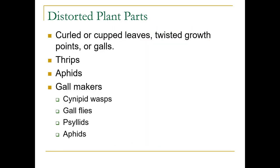Distorted plant parts include curled or cupped leaves, twisted growth points, or galls. These can be caused by thrips, aphids, and then there are a bunch of gall makers — some wasps, gall flies, psyllids, aphids, et cetera. Adelgids are in this group too.